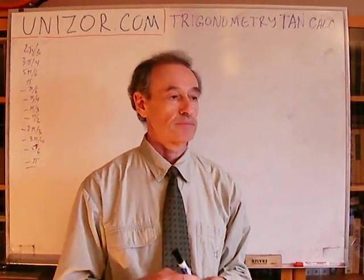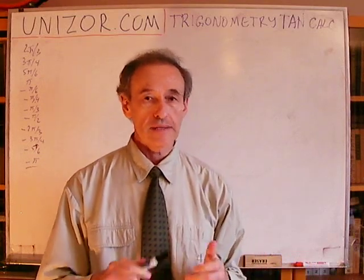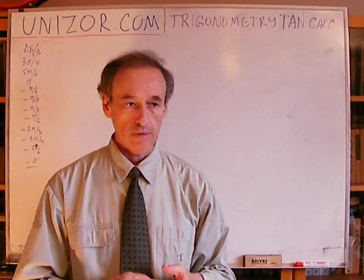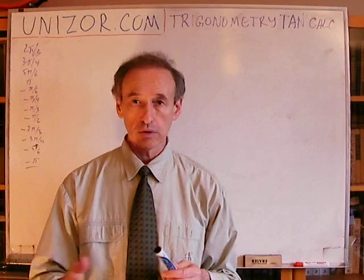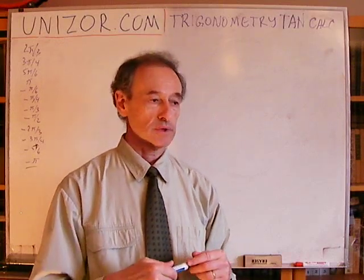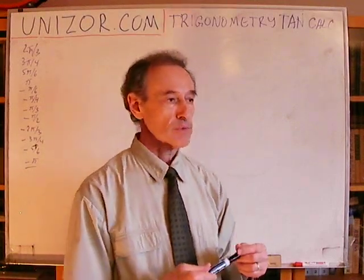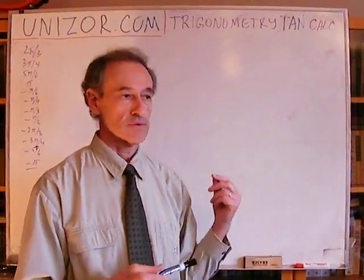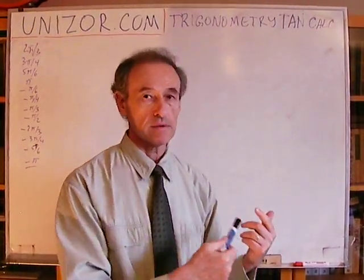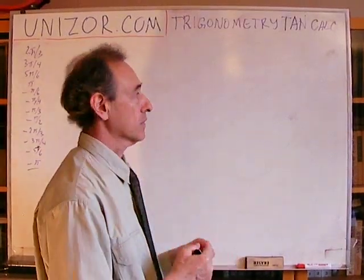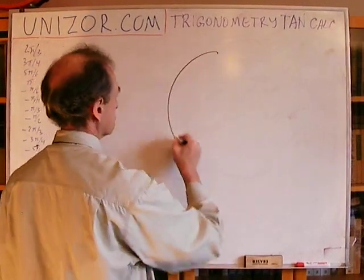We have lots of different basic angles, and obviously I don't remember the value of tangent for all of them. What I suggest is to derive these values from the coordinates of the points on the unit circle which represent these basic angles. That's exactly how I approach this problem, and that's how I suggest you do it.